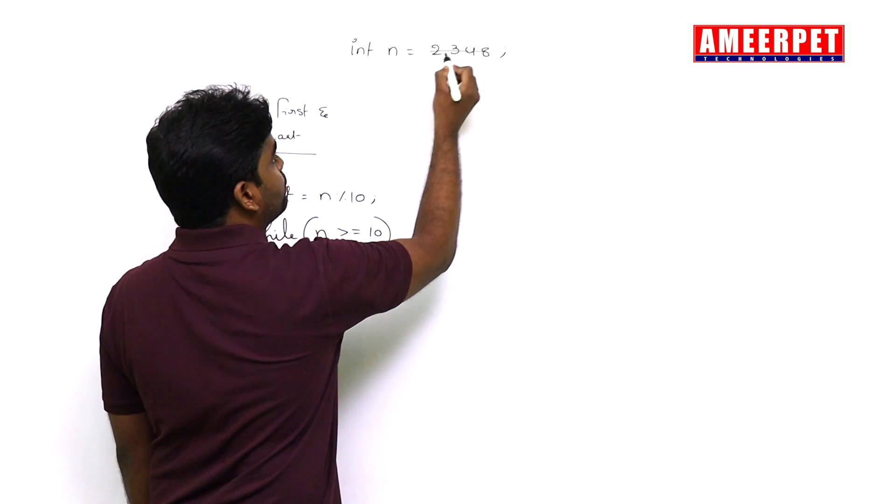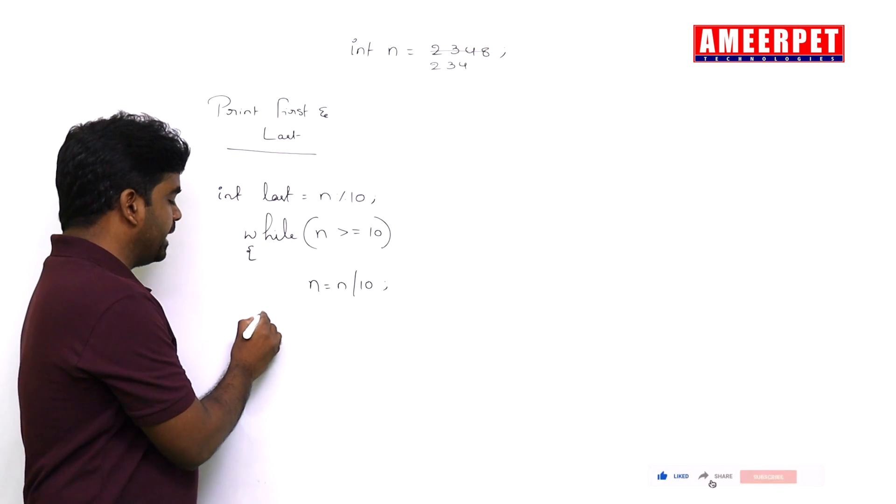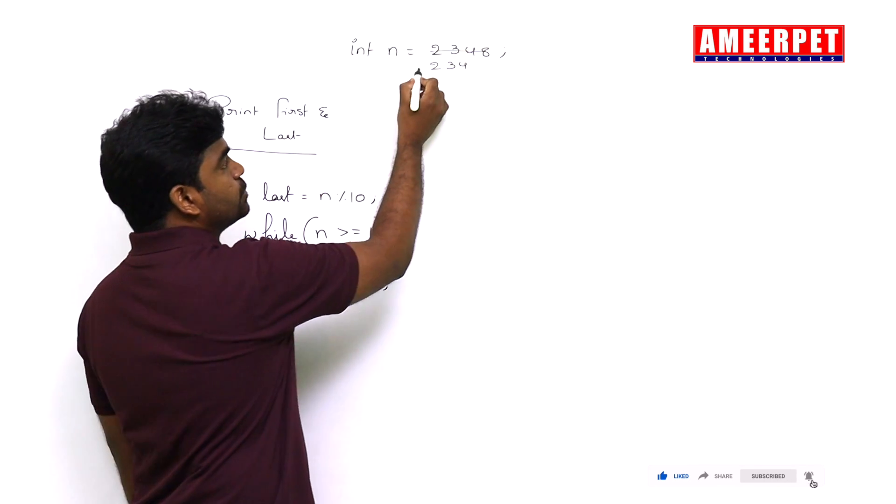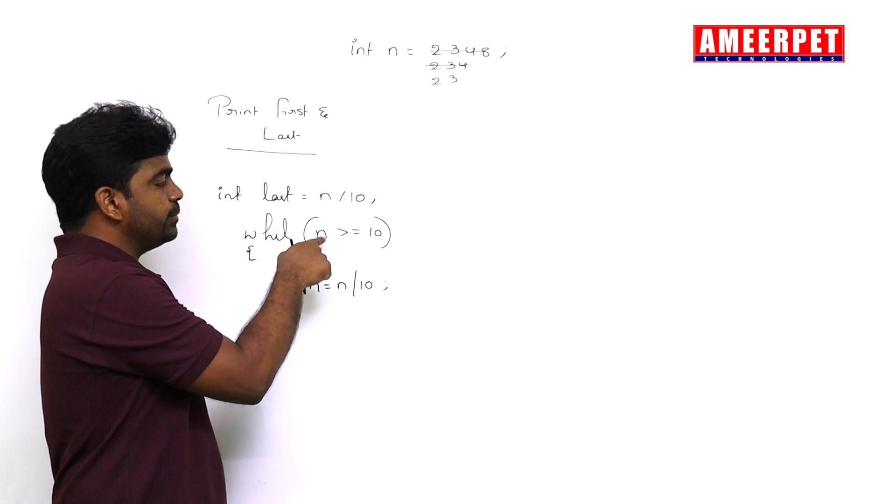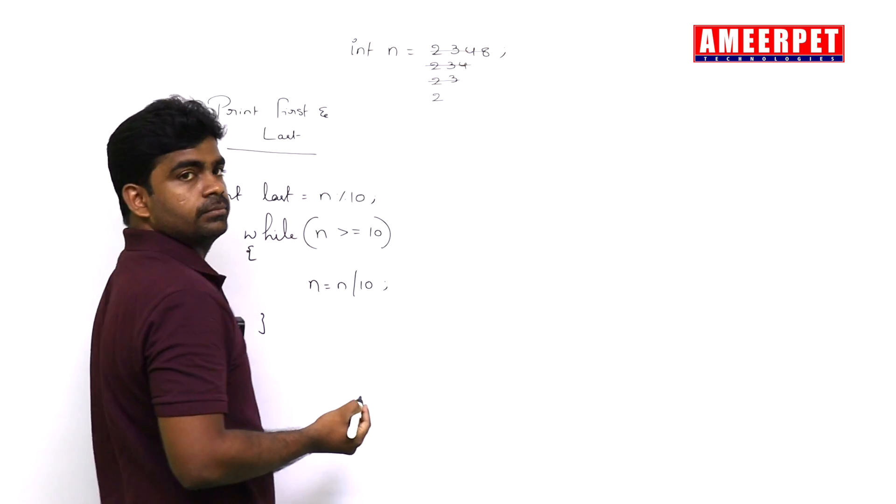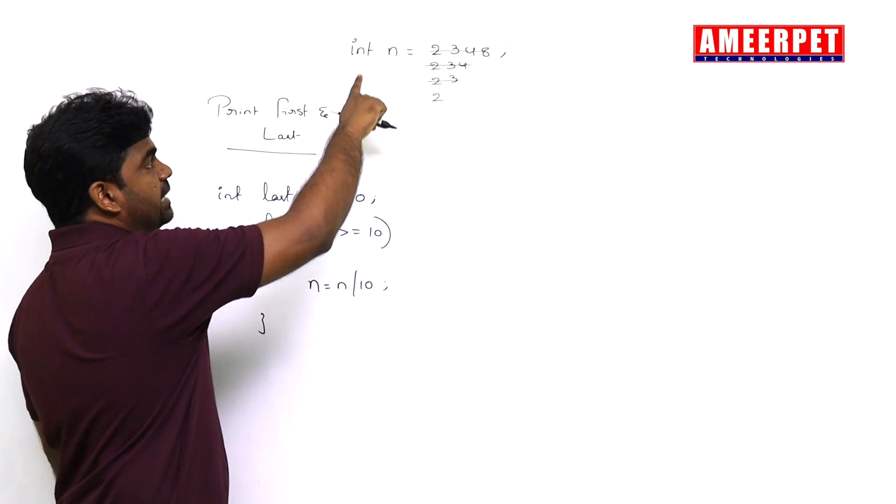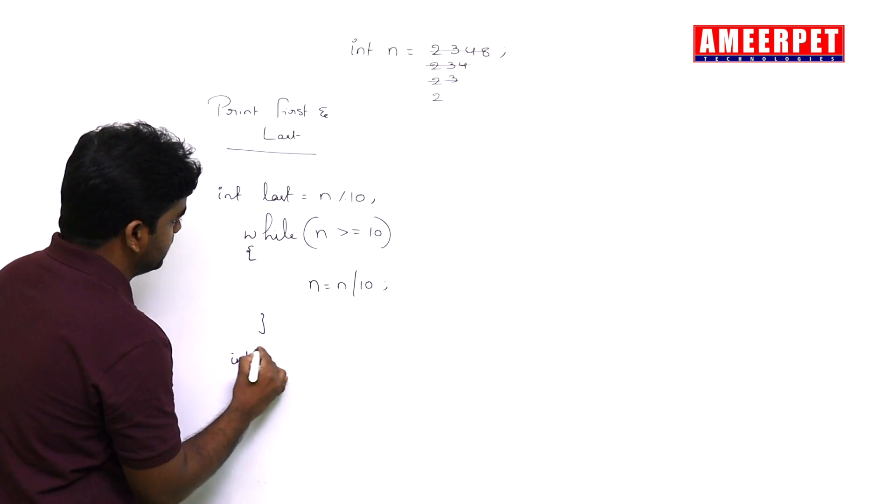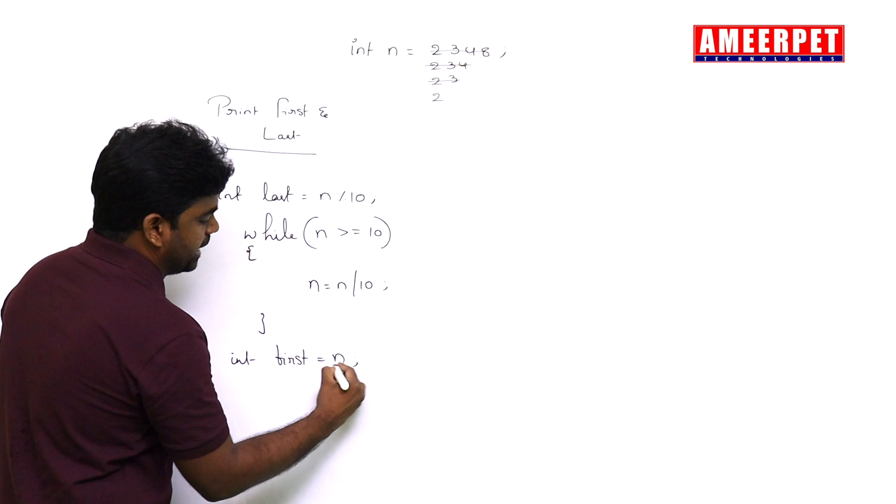From 2348, which is greater than or equals to 10, this condition is true. N equals n divided by 10 means the value becomes 234, then 23, then 2. When 2 is greater than or equals to 10, the condition is false. Finally, that n value you can collect: integer first equals to n.